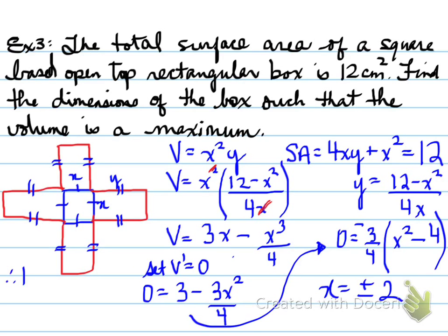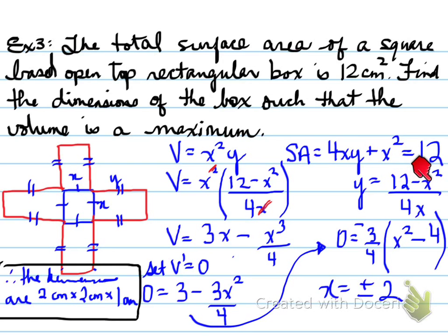Well, knowing this, well, we know that X is a dimension. So could we have a negative 2 as our dimension? The answer is no. So X is equal to 2. What will our Y equal? Well, remember we already had that isolated over here. So when we plug in X equals 2 into here, we find out that our Y value is going to be 1 centimeter, because 12 minus 4 is 8, and on the bottom you have 4 times 2, which is 8. 8 divided by 8 is 1. So the dimensions of this box that maximizes the volume will be 2 centimeters by 2 centimeters by 1 centimeter.